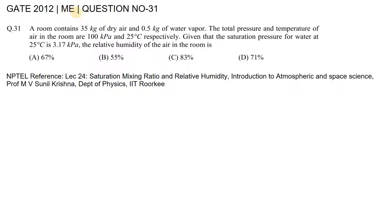This question is from GATE Mechanical Engineering 2012, question number 31. A room contains 35 kilograms of dry air and 0.5 kilograms of water vapor. The total pressure and temperature of air in the room are 100 kilopascals and 25 degrees Celsius respectively. Given that the saturation pressure for water at 25 degrees Celsius is 3.17 kilopascals, we need to find the relative humidity of air in the room.